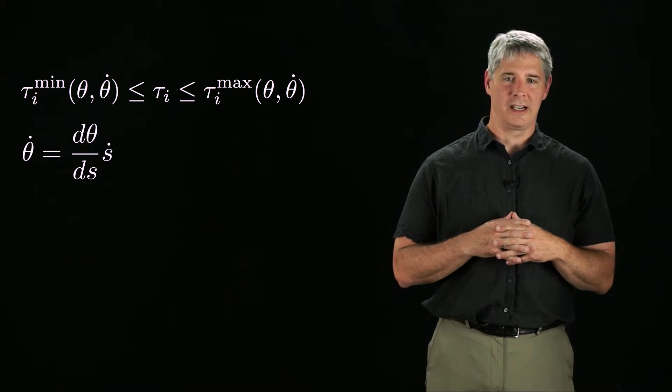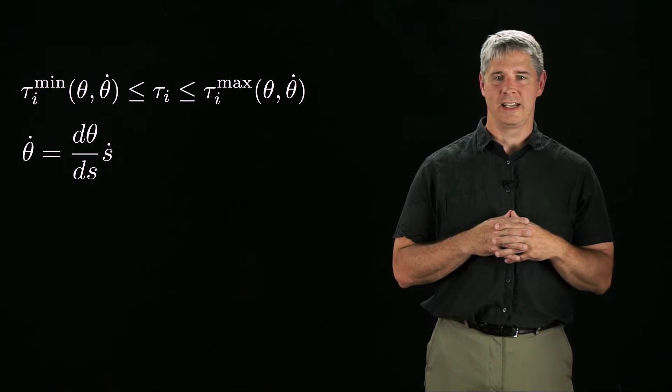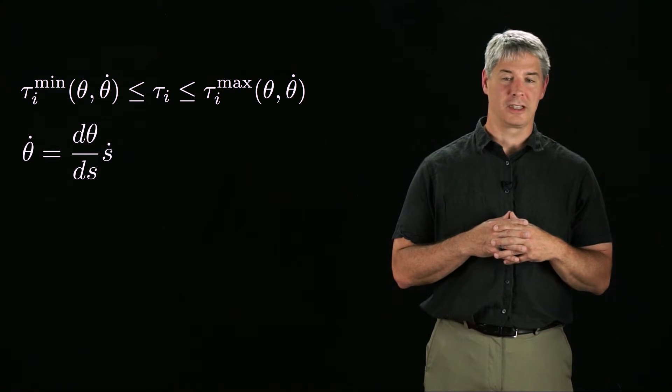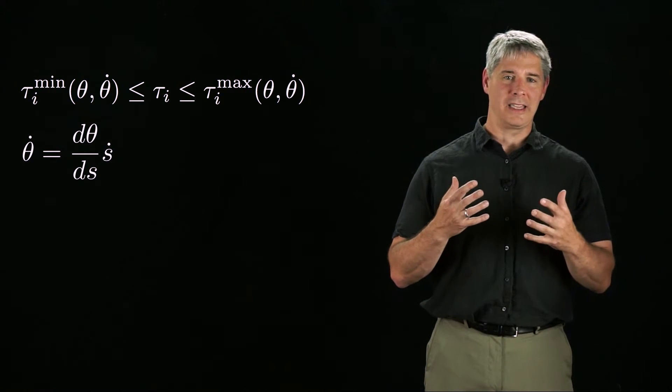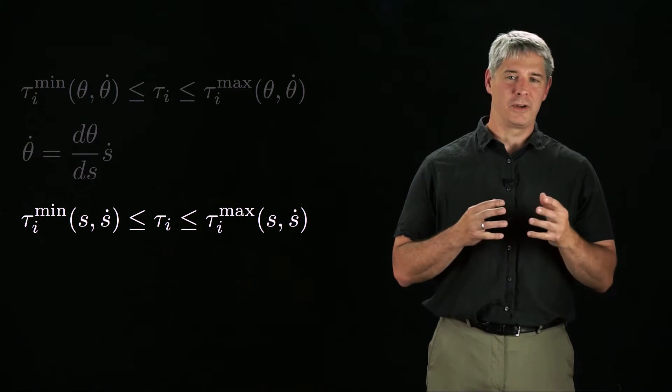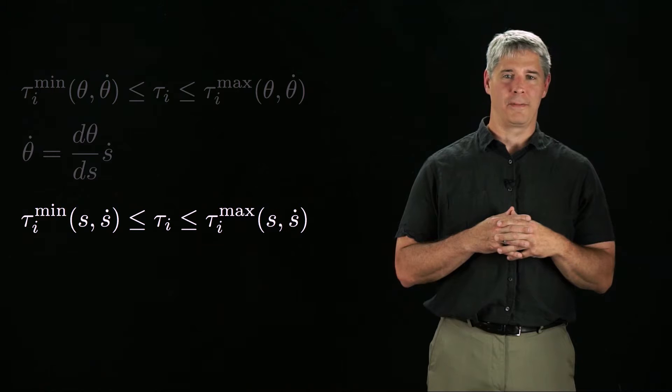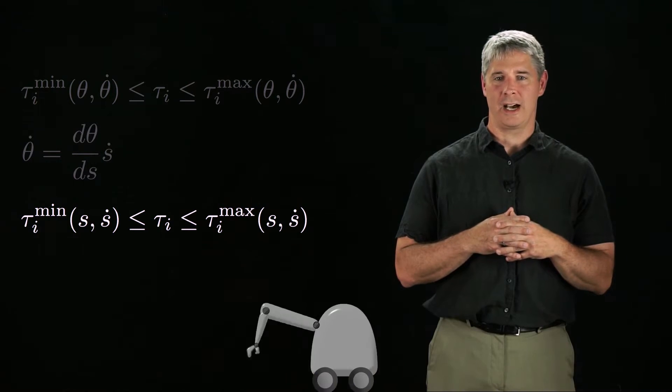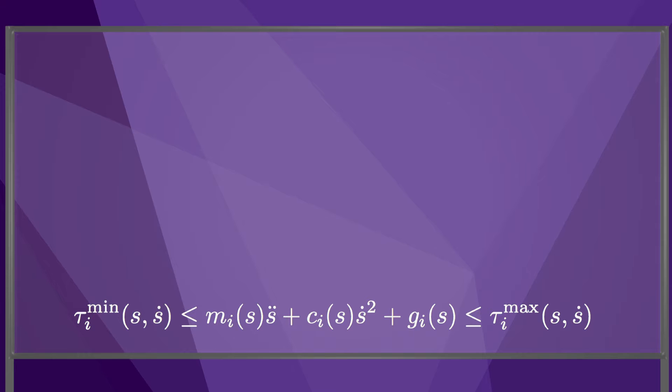Remembering that we can express theta and theta dot in terms of s and s dot when the robot is restricted to the path, we can rewrite the actuator limits as a function of s and s dot. If we substitute the i-th component of the path-restricted dynamics in for tau_i, we get these constraints. The i-th actuator therefore places limits on the possible accelerations s double dot along the path when the robot is at the state (s, s dot).